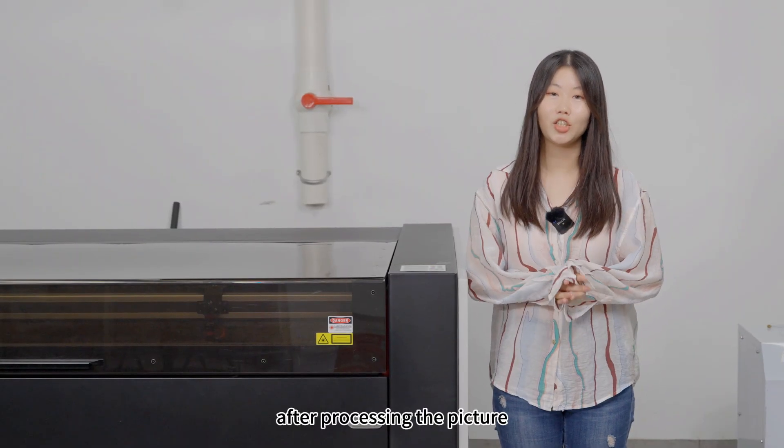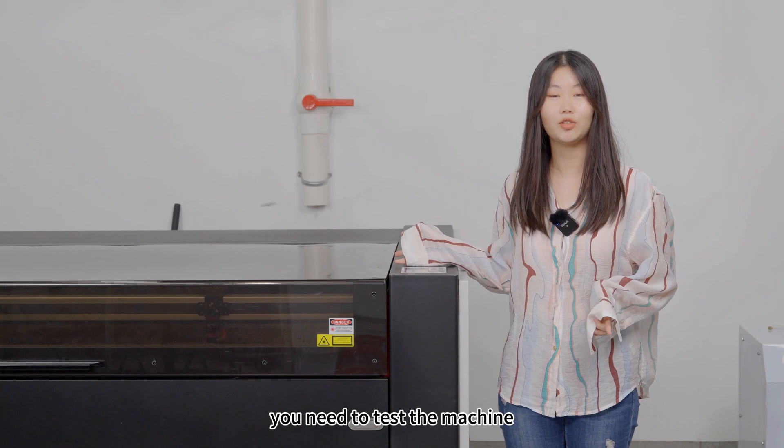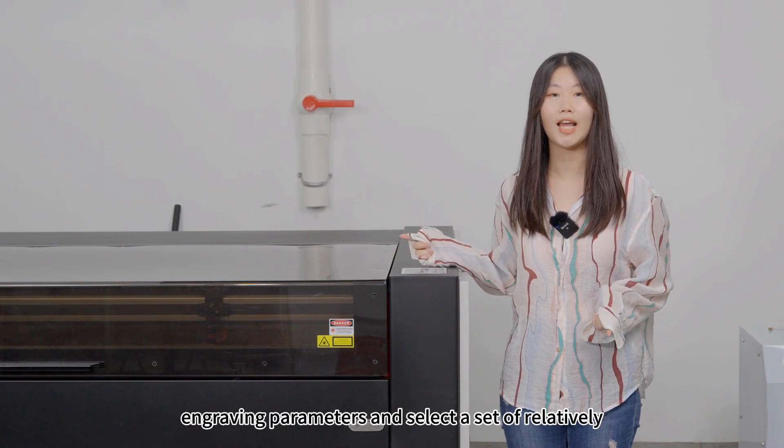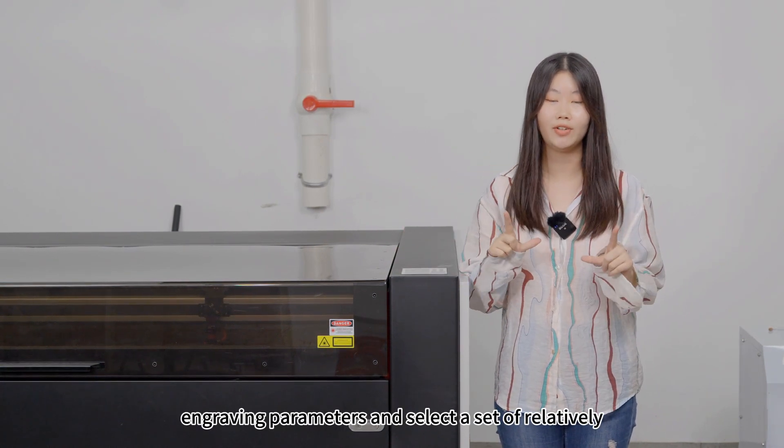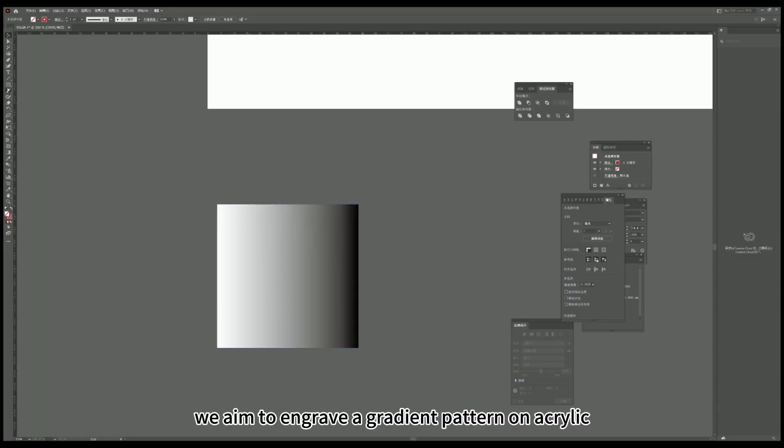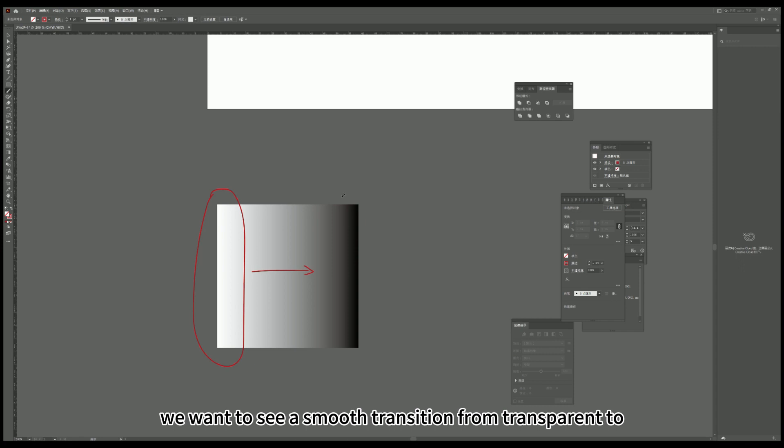After processing the picture, you need to test the machine, try different engraving parameters and select a set of relatively ideal parameters. We aim to engrave a gradient pattern on acrylic. We want to see a smooth transition from transparent to opaque while keeping the middle section of the acrylic semi-transparent.